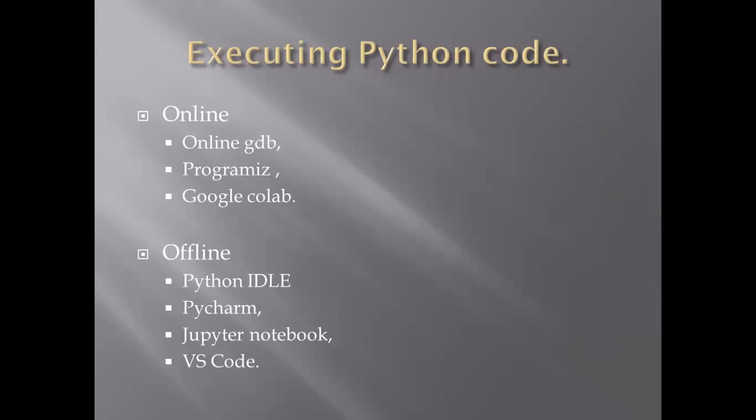Till now we have seen what are the uses of Python, what is Python, and why we use Python. Now, how to execute Python code. We can execute Python code in two ways: online or offline. Online we have Online GDB, Programiz, and Google Colab. Offline we have Python IDLE, PyCharm, Jupyter Notebook, and VS Code.